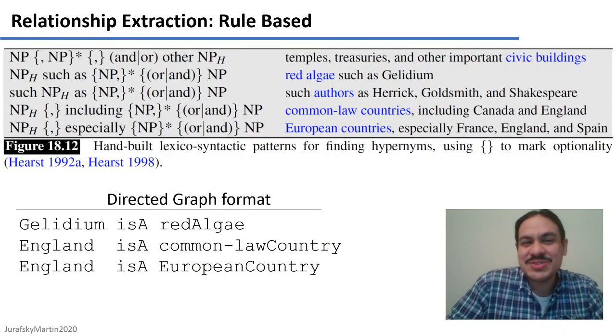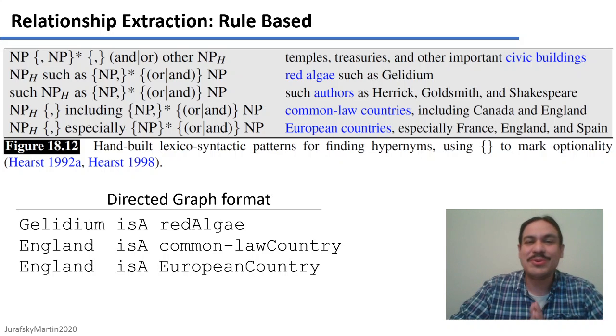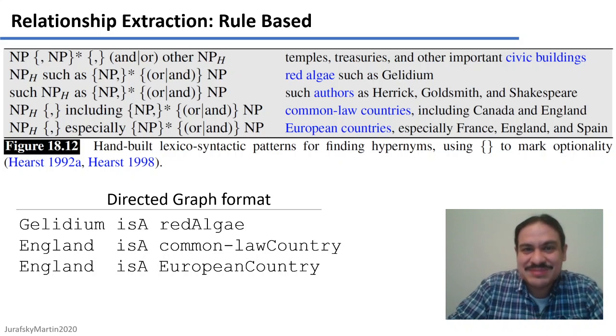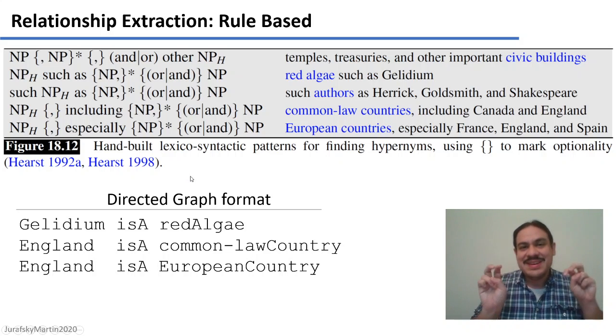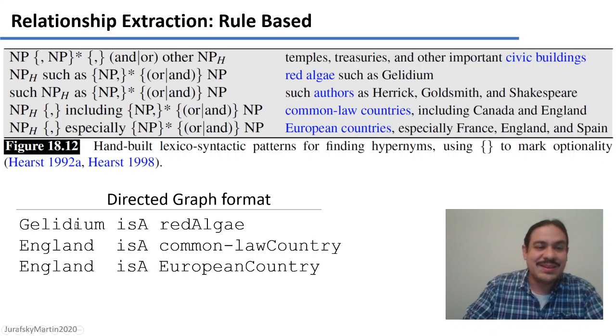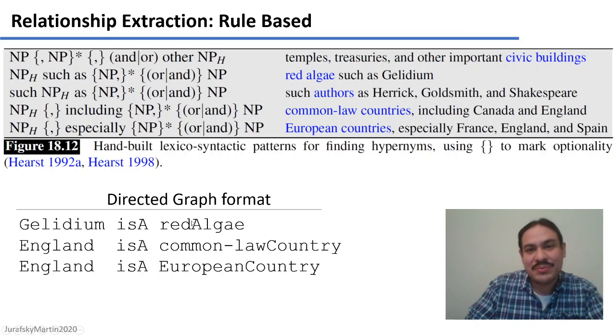Let's begin with relationship extraction, and here we have our good old friends, regular expressions. This is an example from the textbook, and these are all regular expressions for the relationship is a, like galidium is a red algae.